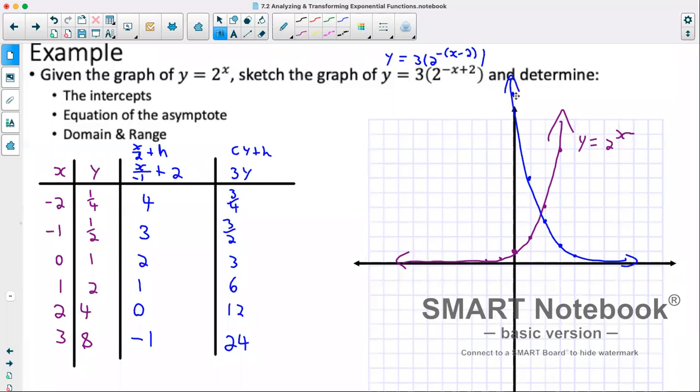Now in this case, our y-intercept is up here. That's where x is 0. So our y-intercept is at 12. We don't have an x-intercept here. Equation of our asymptote, it's still at y equals 0 because we did not have a vertical shift. Our domain is once again going to be x is all real numbers. And our range, because we did not shift our graph vertically, will still be y has to be greater than 0.